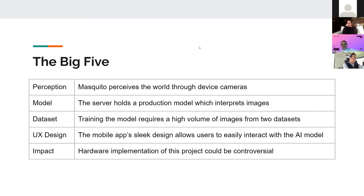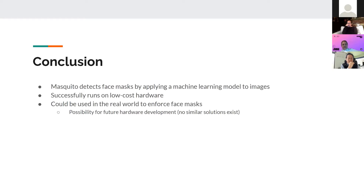The big five — perception: MISIDO perceives the world through cameras, the server holds the production model, training the model required a high volume of images, the app has a sleek design built for the average consumer, and a hardware implementation of this project could be controversial. In conclusion, MISIDO detects face masks by applying a real-world machine learning model to images. It successfully runs on low-cost hardware and could be used in the real world with future funding in a hardware development environment.